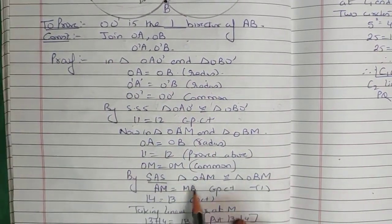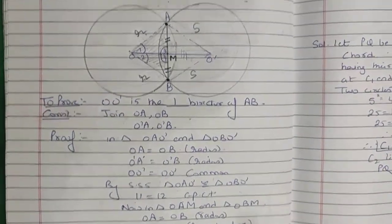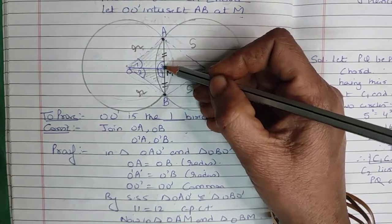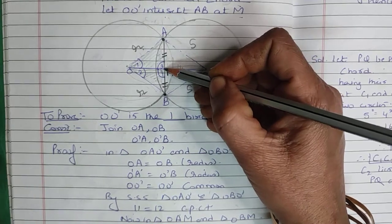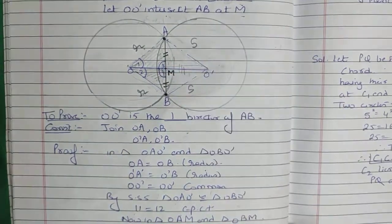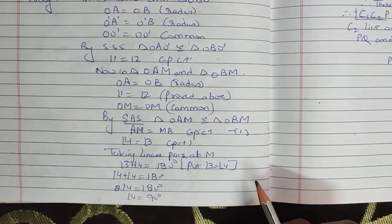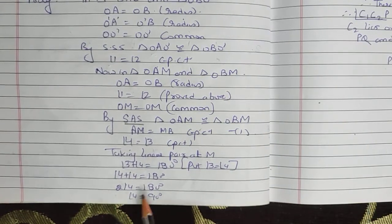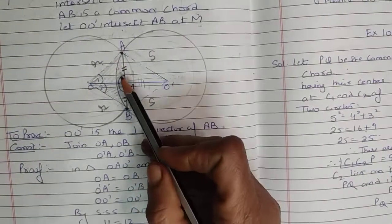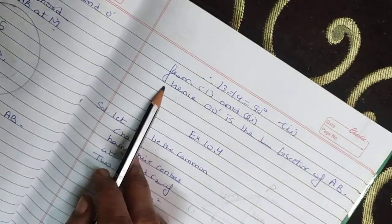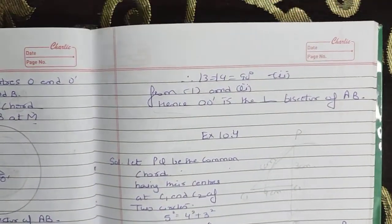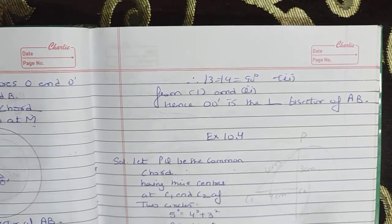From the SAS congruency, corresponding sides give AM equals MB by CPCT. Then we take angle 3 equals angle 4 from CPCT. Taking the linear pair of angles 3 and 4: their sum is 180°. Since they are equal, twice angle 3 equals 180°, so angle 3 equals 90°. Therefore OO' is perpendicular to AB. Combined with AM equals MB, OO' is the perpendicular bisector of AB — hence proved.